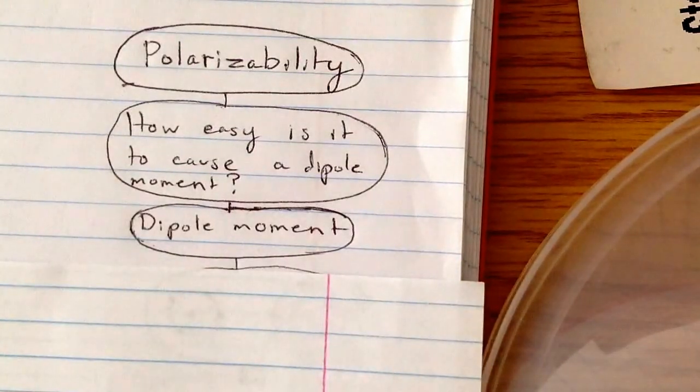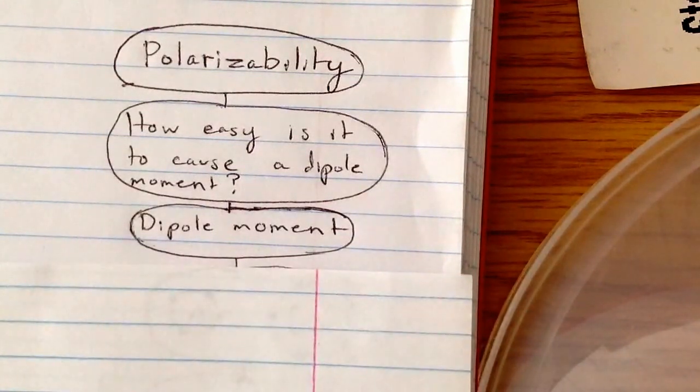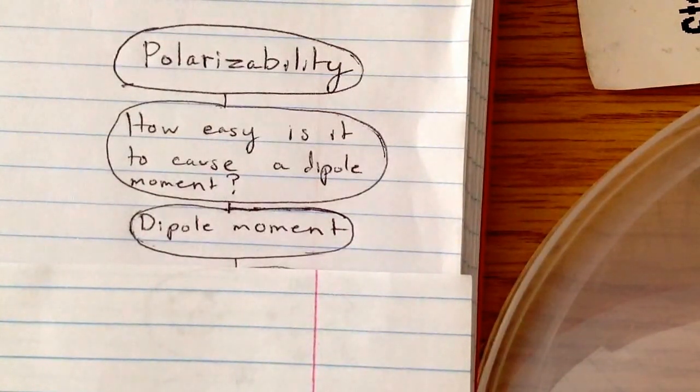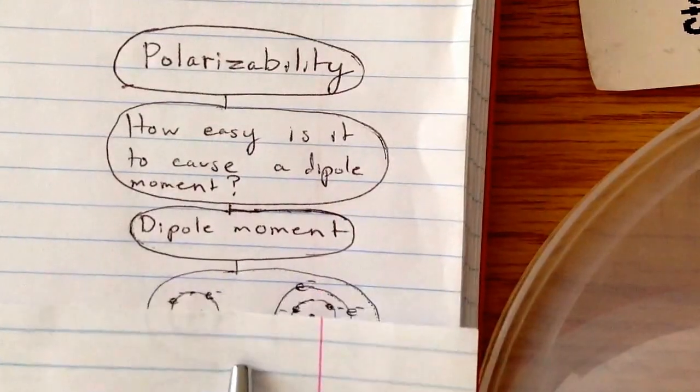What's the importance of that? Well, that's how intermolecular forces are created because when you have a slightly partial charge and a slightly negative charge, that can create attractions between molecules and helps create intermolecular forces.